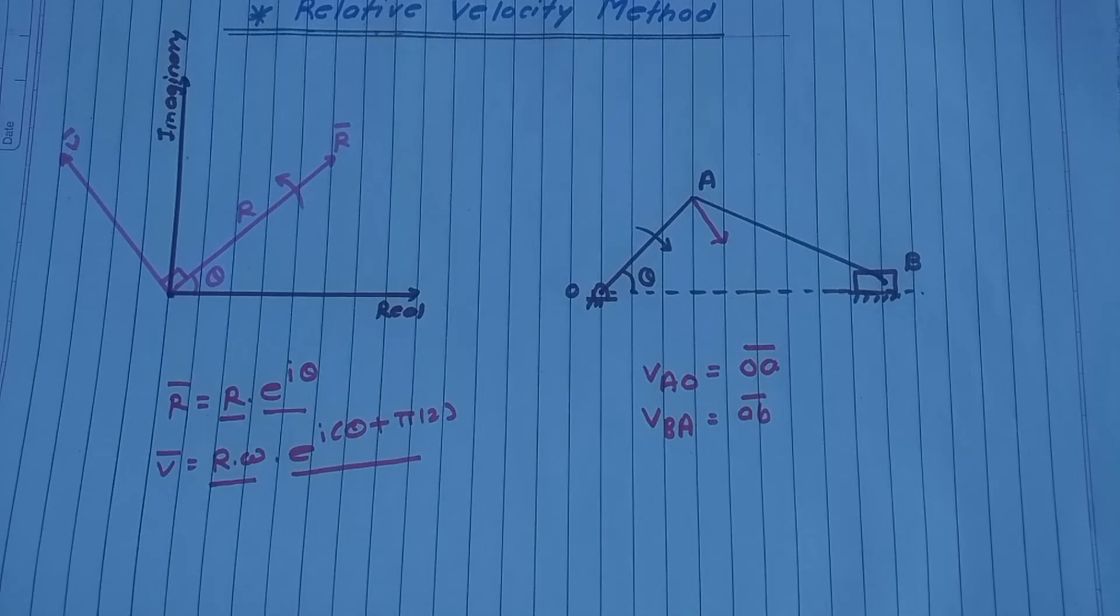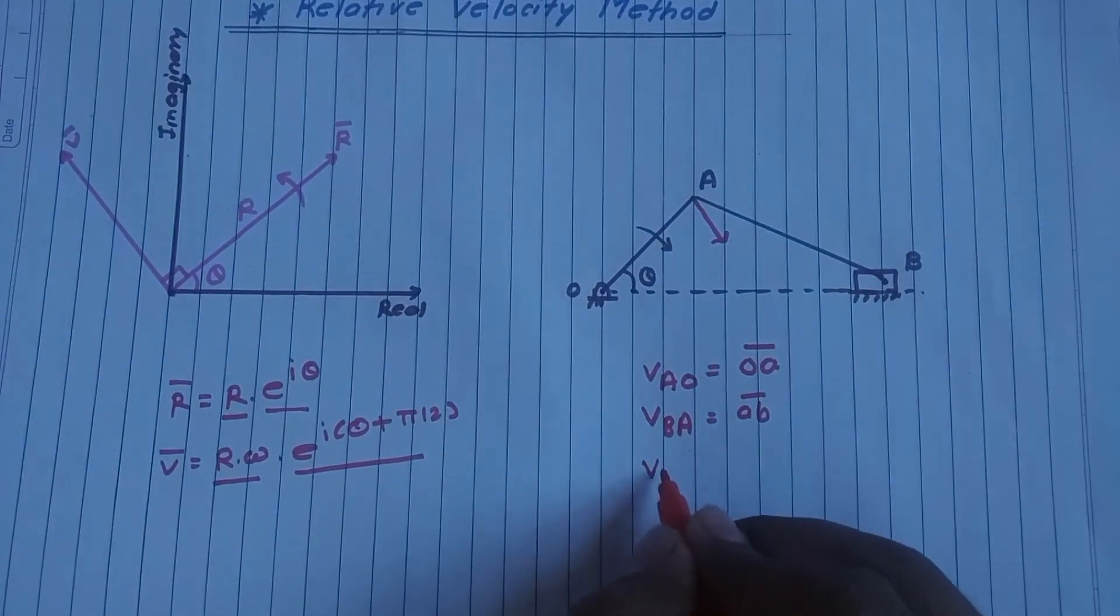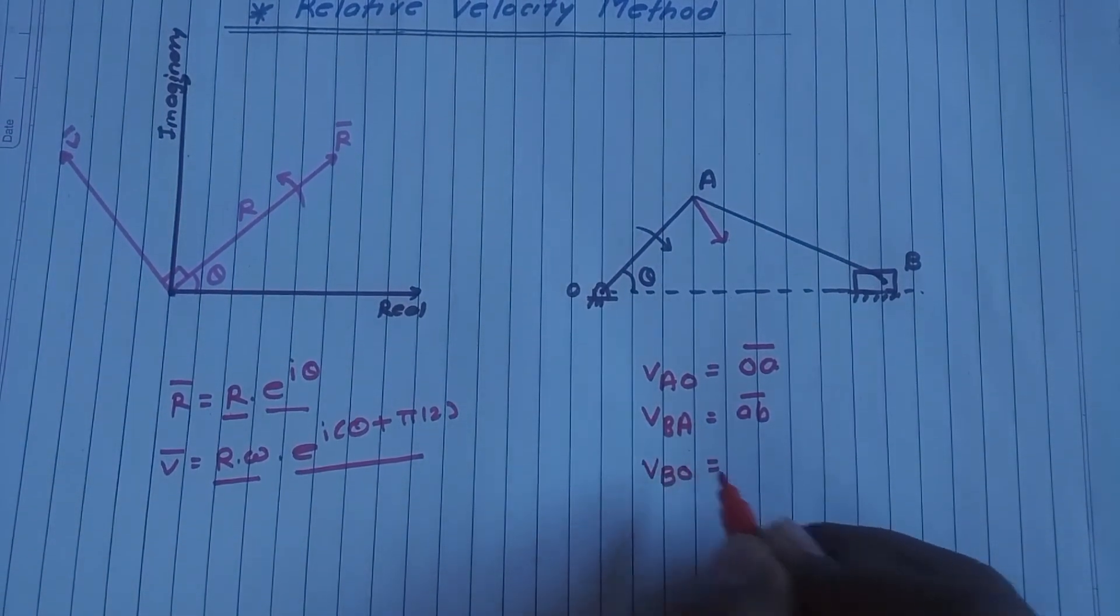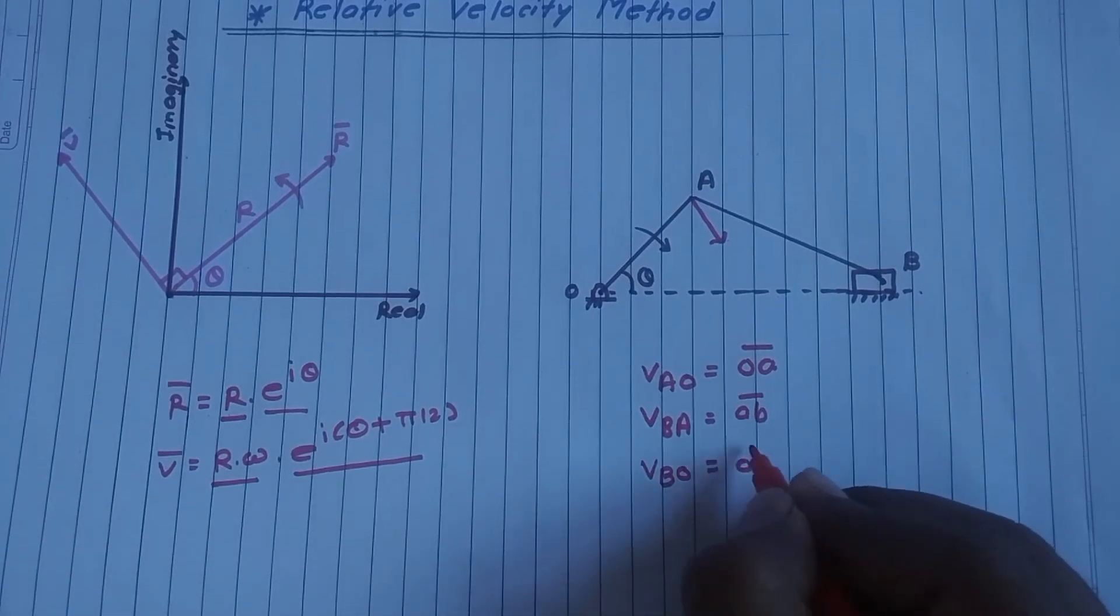Again slider is moving in this fixed link. So velocity of B with respect to fixed point O is OB bar.